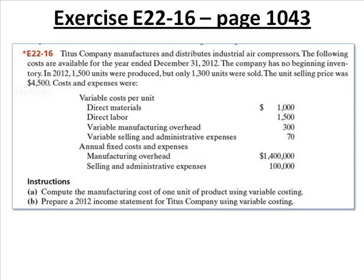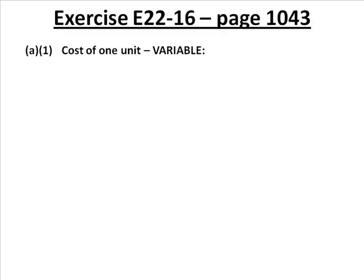Costs and expenses are listed there. The instructions say: compute the manufacturing cost of one unit using variable costing, and prepare an income statement using variable costing. Let's do what they ask in part A — compute the manufacturing cost of one unit using variable costing. I'm wondering if you would be willing to participate and name a cost that should be included in this answer. Jeff, will you start us out?